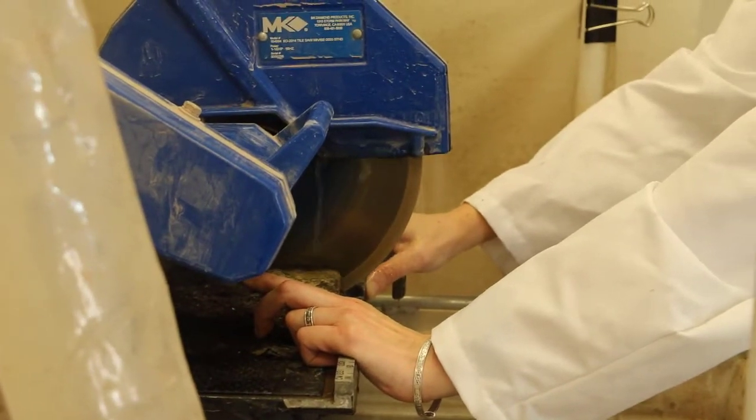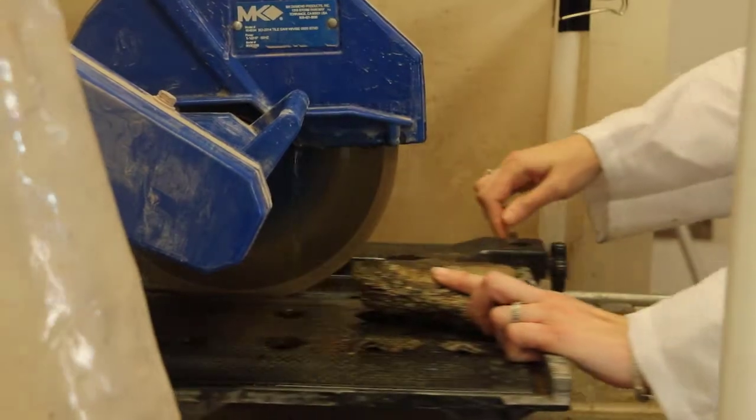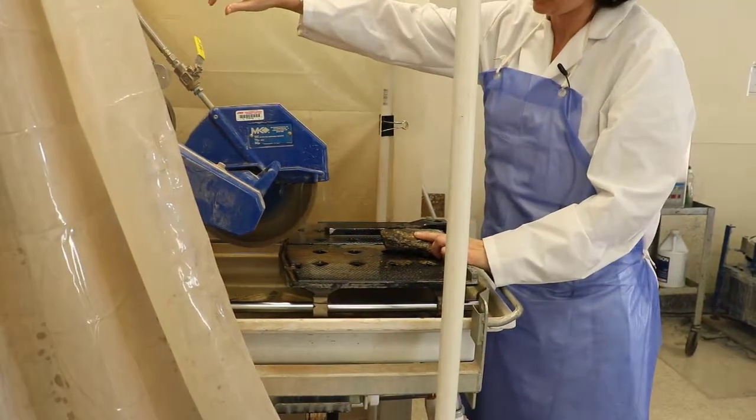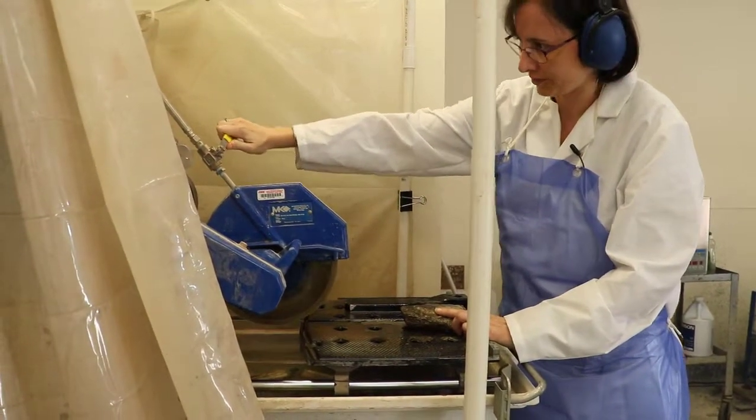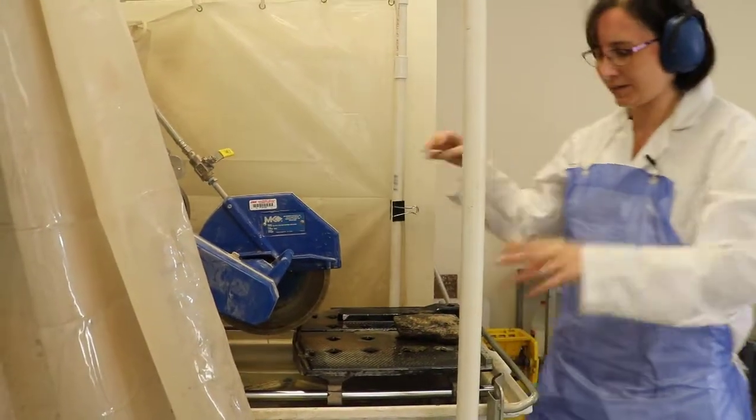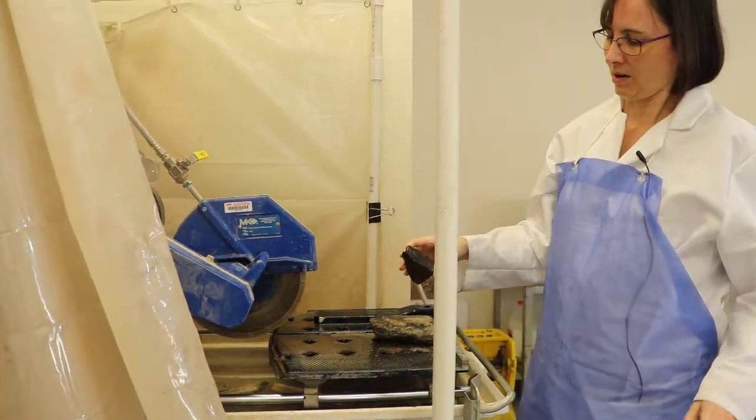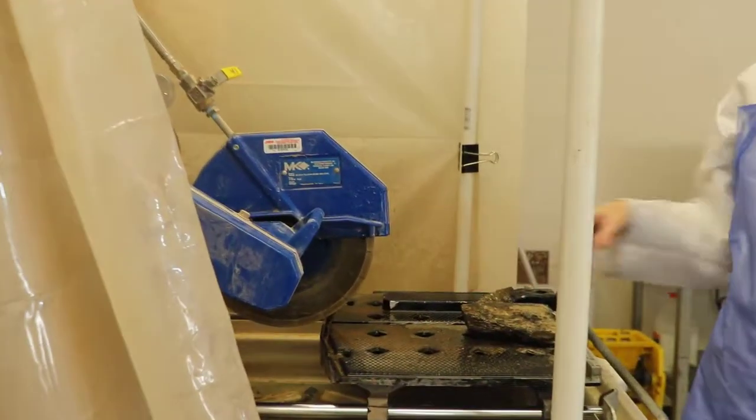I'm pushing it all the way through. And then I turn it off, and remember to turn the water off. You can see that the second I cut through it, this part started wiggling around, and that's when I know I want to back out as quickly as possible so this doesn't get stuck in there.